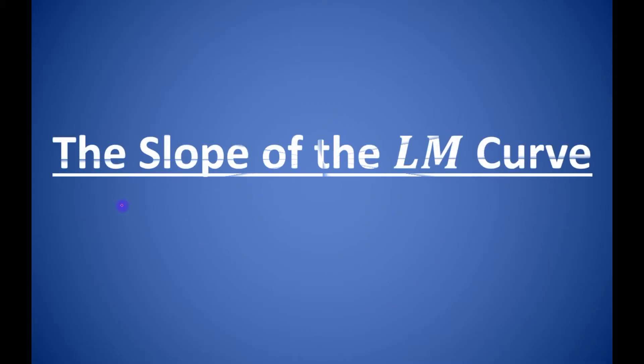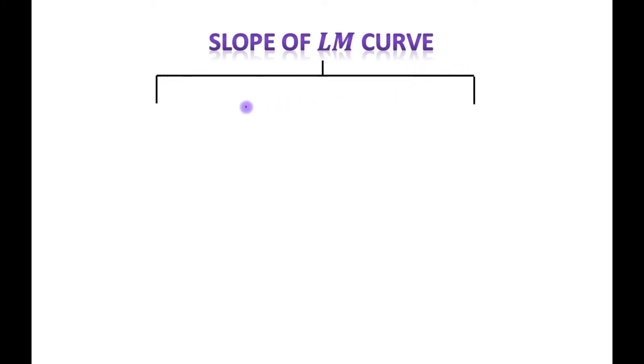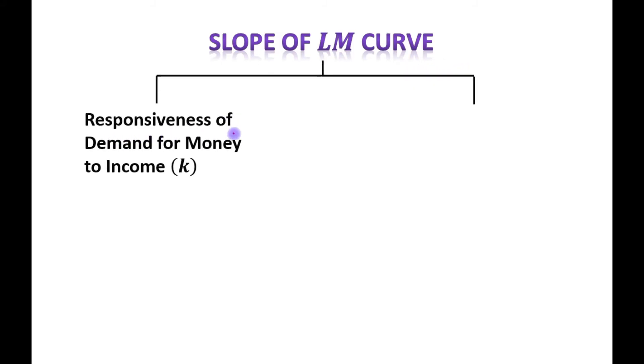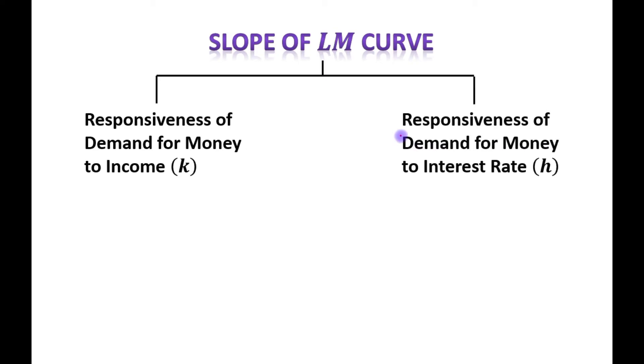Hello students. Today's topic is the slope of the LM curve. The slope of the LM curve depends upon the responsiveness of demand for money to income, denoted by K, and the responsiveness of demand for money to interest rate, denoted by H.